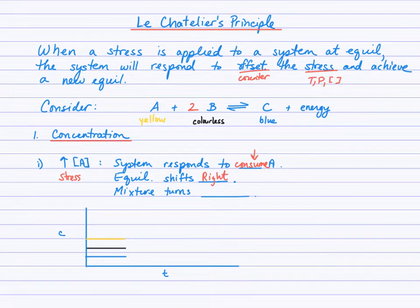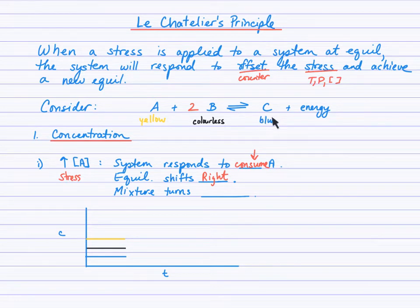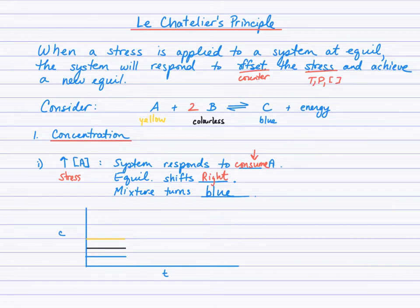What's going to happen to the mixture in terms of color if the equilibrium position has shifted right? We have an original equilibrium with yellow A, colorless B, and blue C. If the equilibrium position shifts right, we'll have more C than before, so the mixture will turn more blue. Whether it turns completely blue depends on how much we increase the concentration of A.